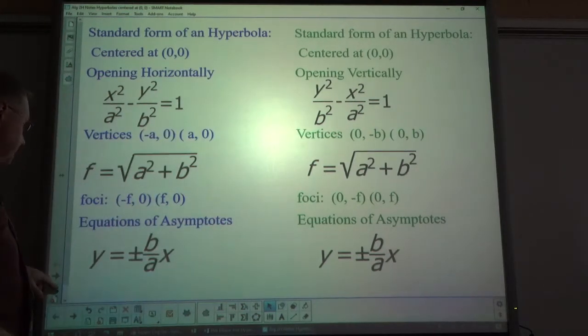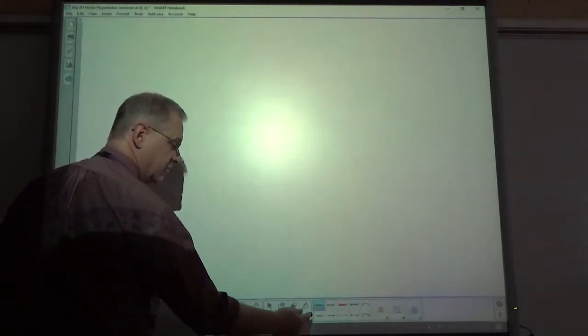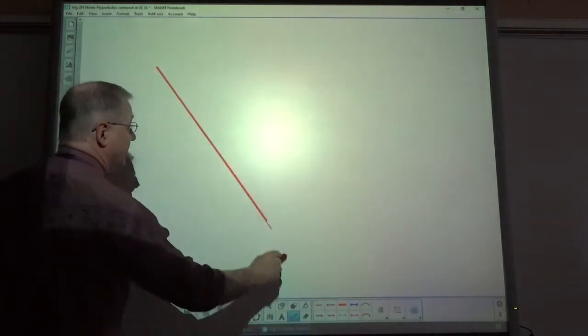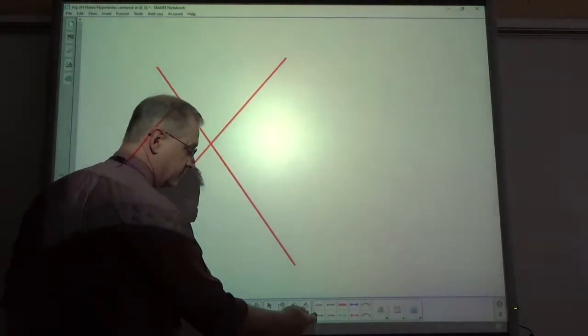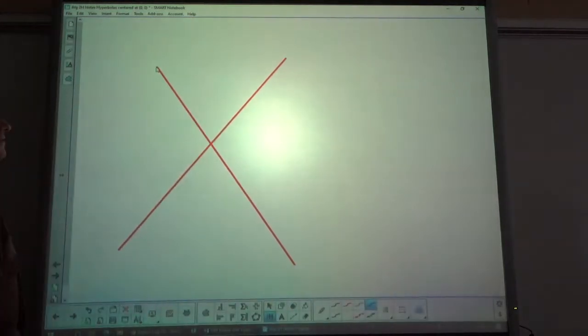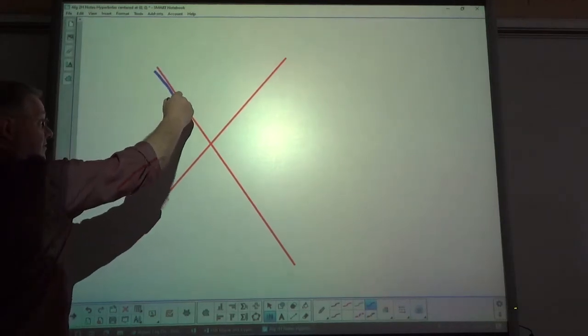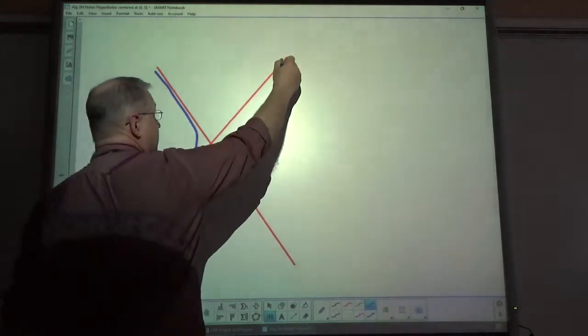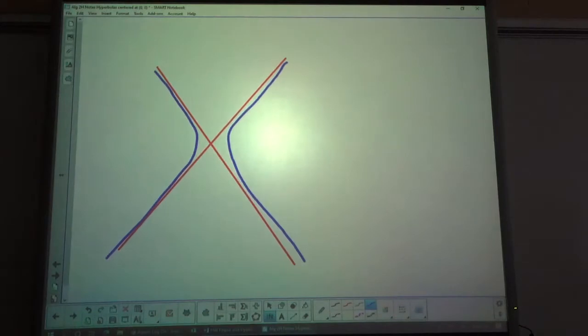Now, a hyperbola has two lines that are called asymptotes. The asymptotes might look like that. They are crisscrossing lines. And if it's a horizontal opening, it really hugs this, and then it curves and does that typically. So that would be a hyperbola.